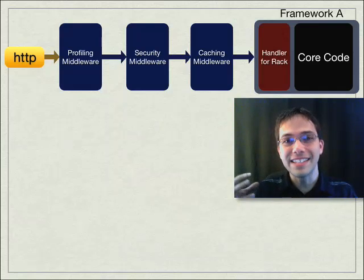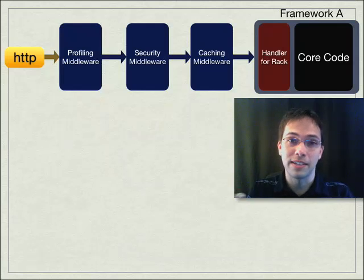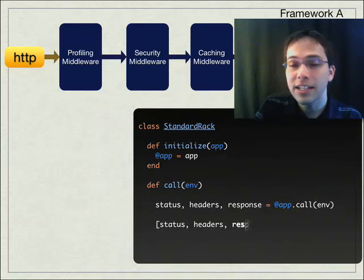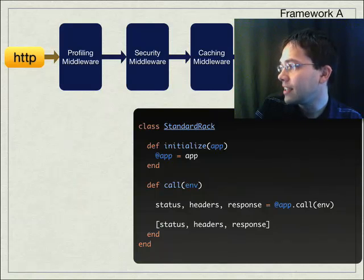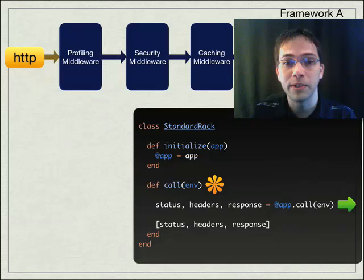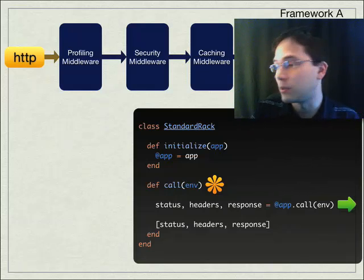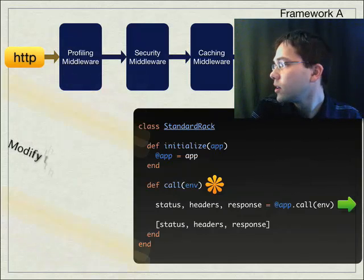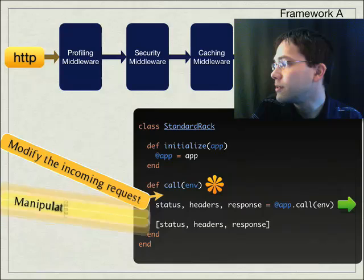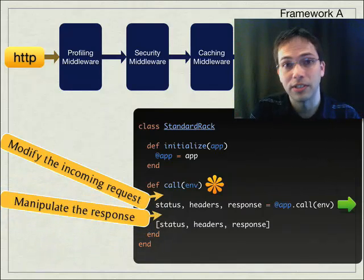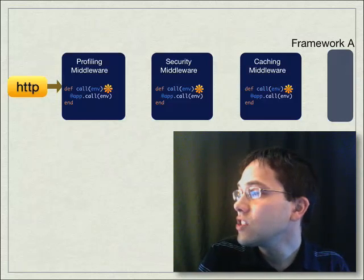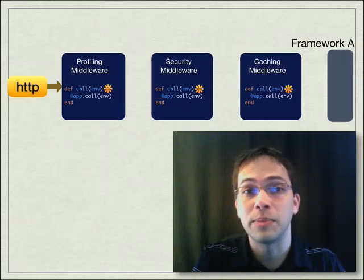You might be wondering what's going on inside each piece of middleware. Just like Rack has a basic anatomy, so does Rack middleware. Each piece has an initialize method which takes in an app, and a call method. We'll use symbols to identify the call definition and the call forward to the next piece of middleware. If we wanted to modify the incoming request before calling forward, we could do it there. If we wanted to manipulate the response from our application, we would insert code after the call forward.